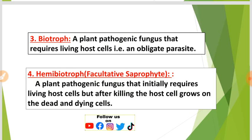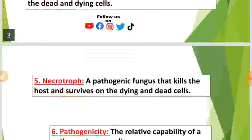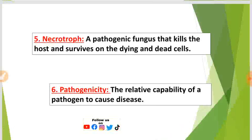Number four: Hemibiotroph or facultative saprophyte. A hemibiotroph is a plant pathogenic fungus that initially requires living host cells, but after killing the host cell, grows on the dead and dying cells. So hemibiotrophs are initially parasites, but after killing the host they become saprophytes.